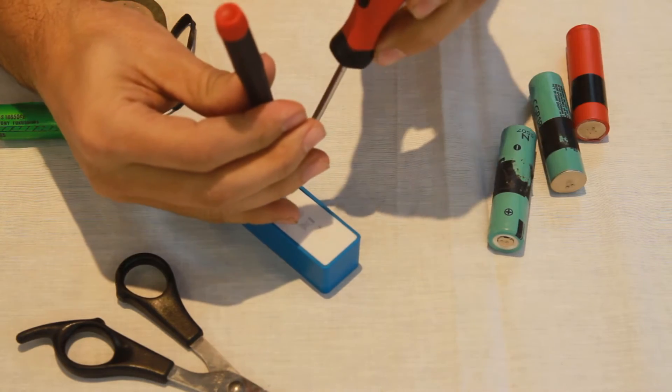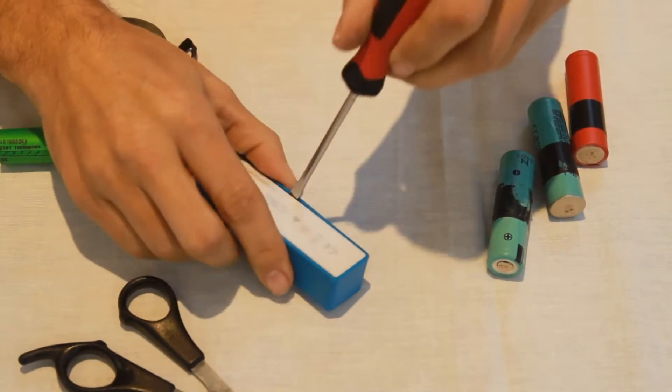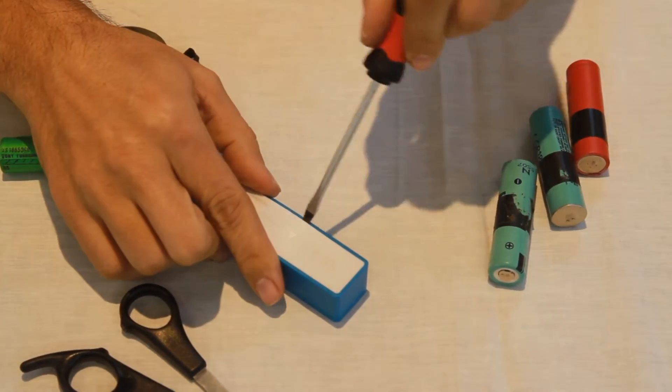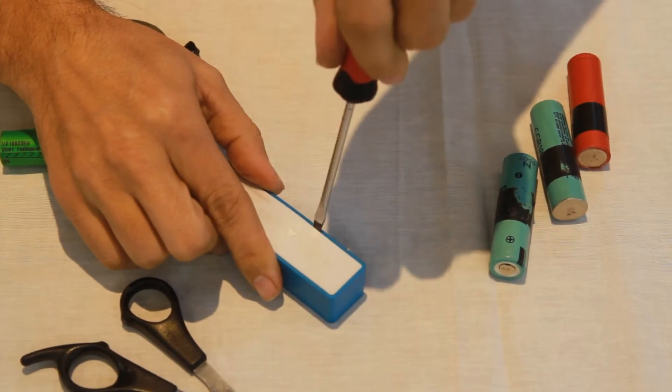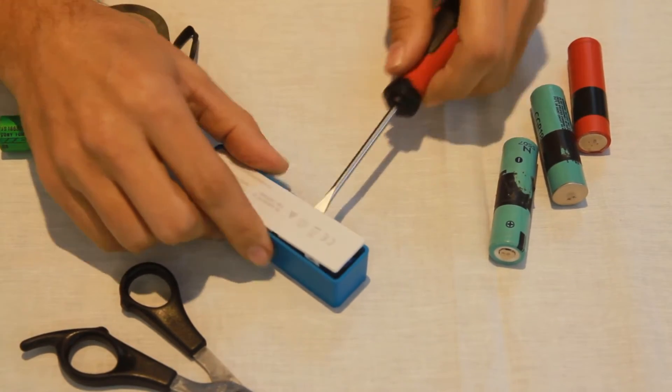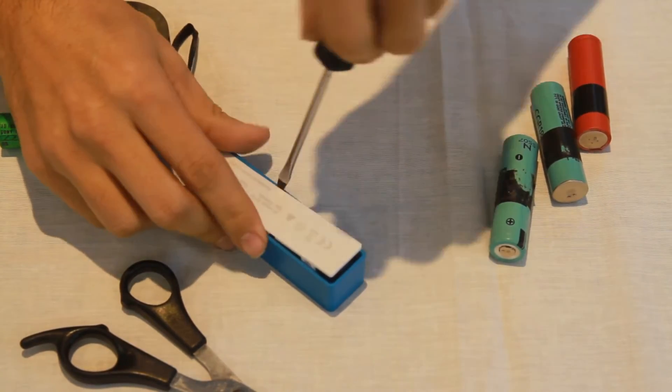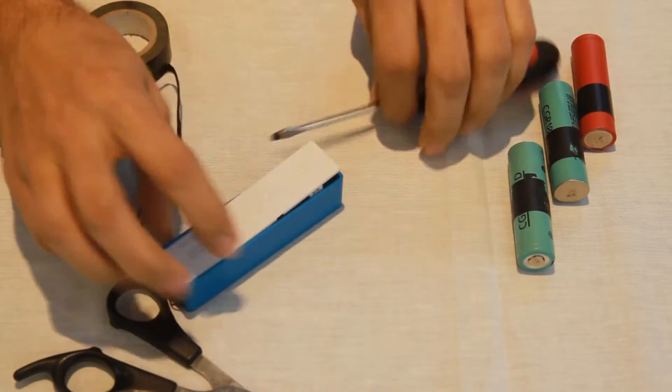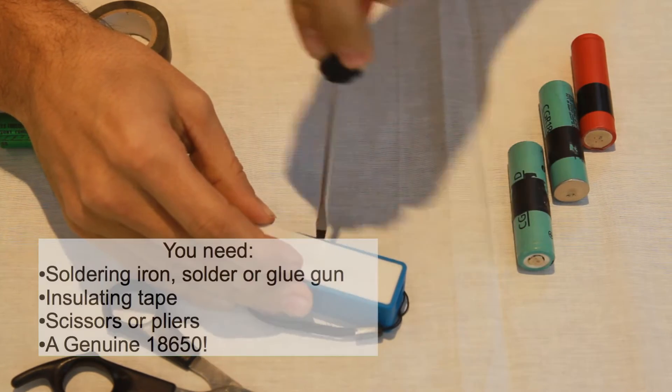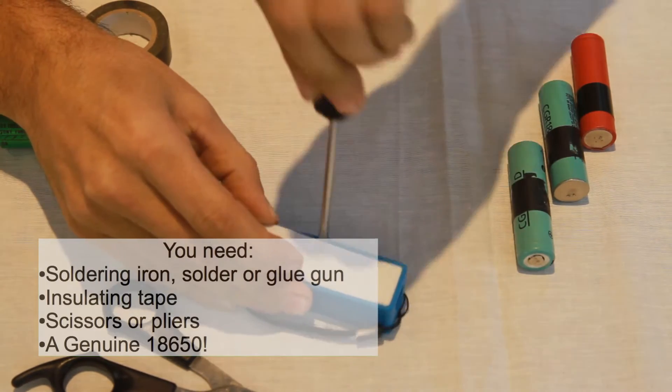Then just carefully ping up the plastic that's sealing the unit. That's fairly easy to do, just work my way around.